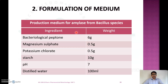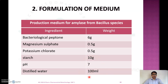An ideal media for a Bacillus species contains bacteriological peptone 6 grams, magnesium sulfate 0.5 grams, potassium chloride 0.5 grams, and starch 10 grams. We adjust pH to 7 and make up the medium with distilled water to 100 ml.